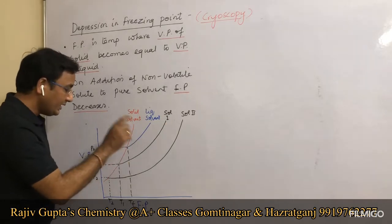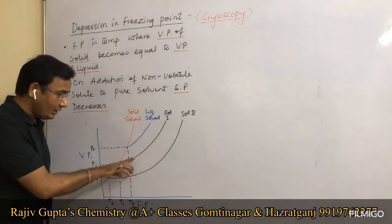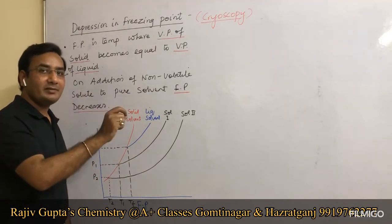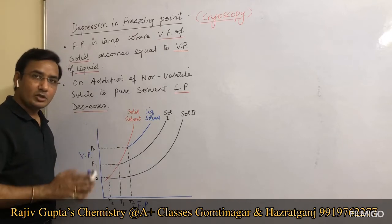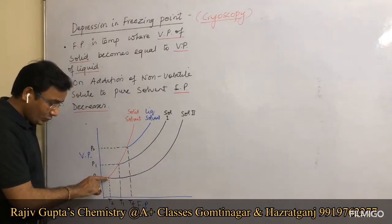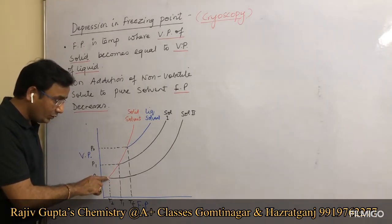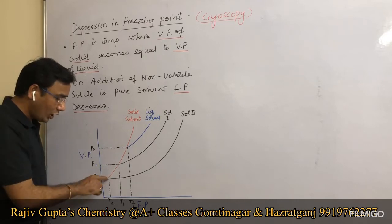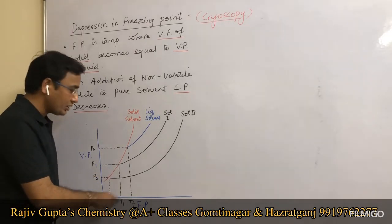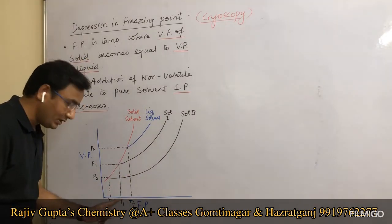When some solute is added (solution 1), relative lowering of vapor pressure occurs. The vapor pressure of the solid solvent equals the vapor pressure of solution 1 at a lower temperature — this is the new freezing point for solution 1. Solution 2, being more concentrated, shows an even greater depression in freezing point.